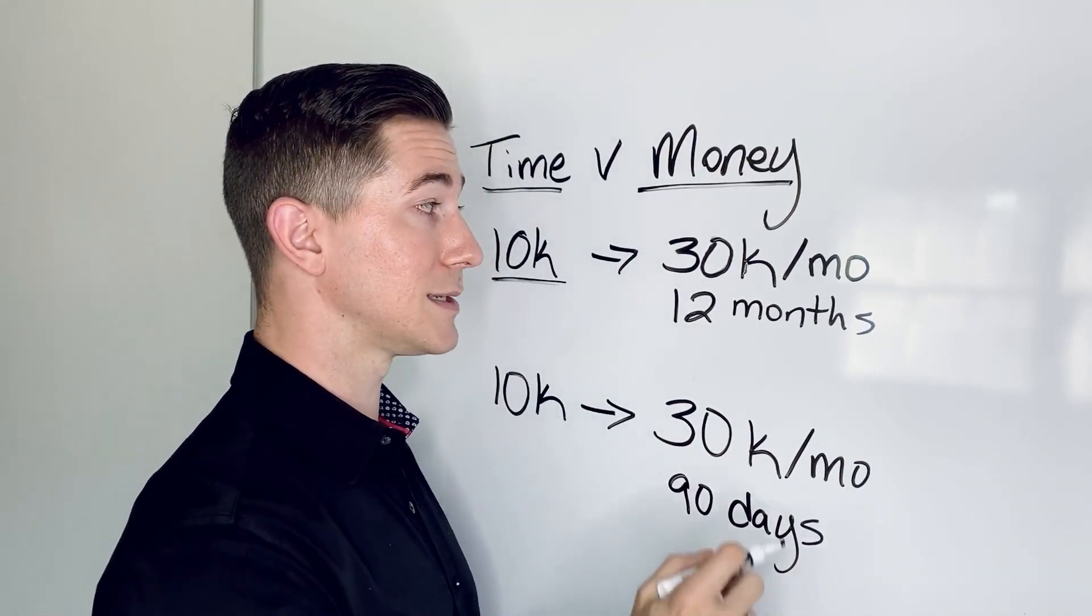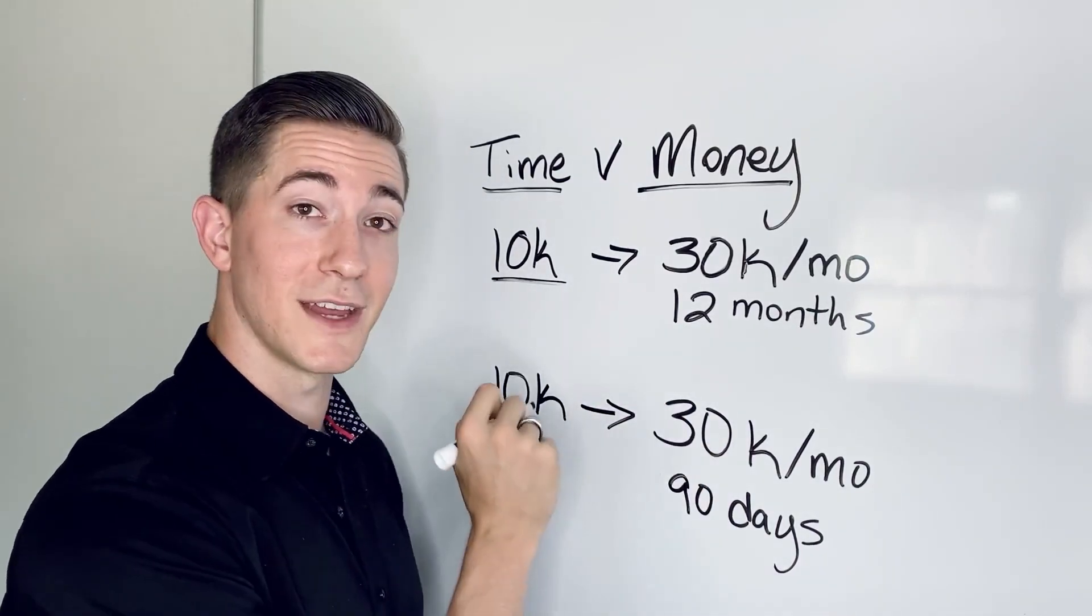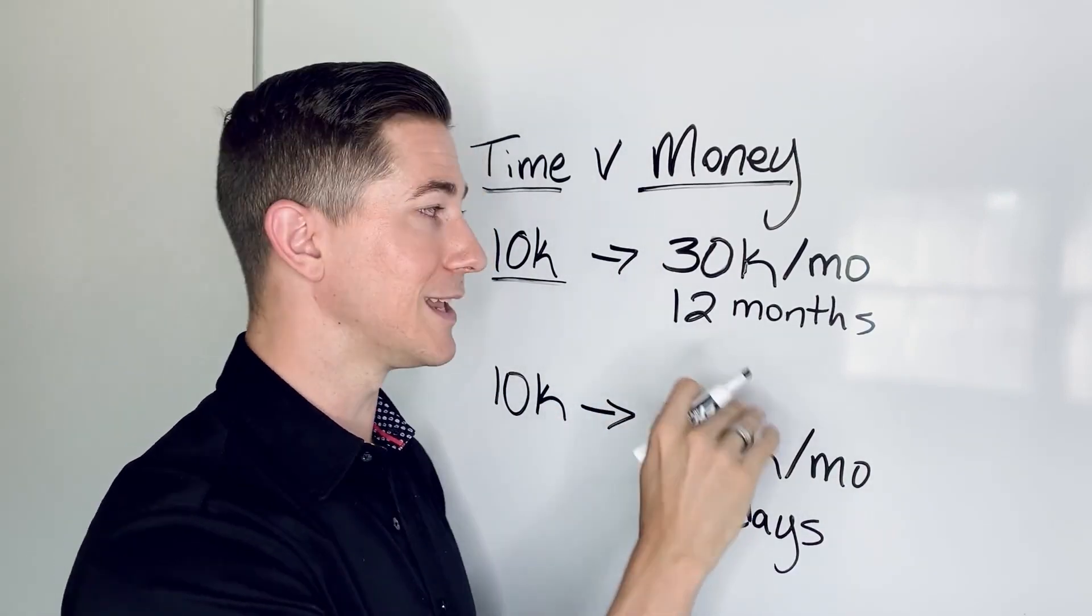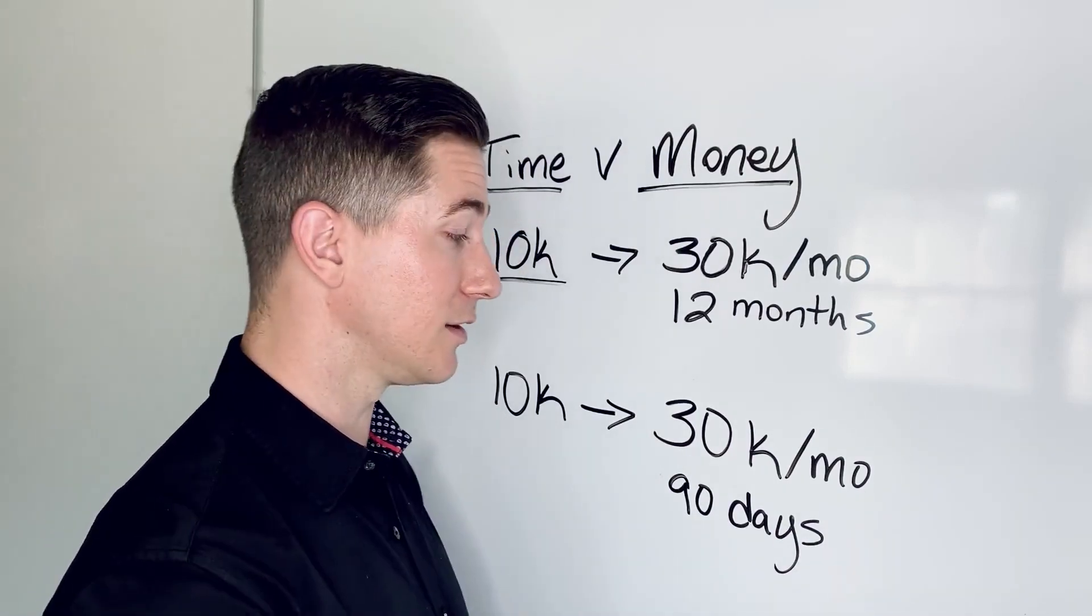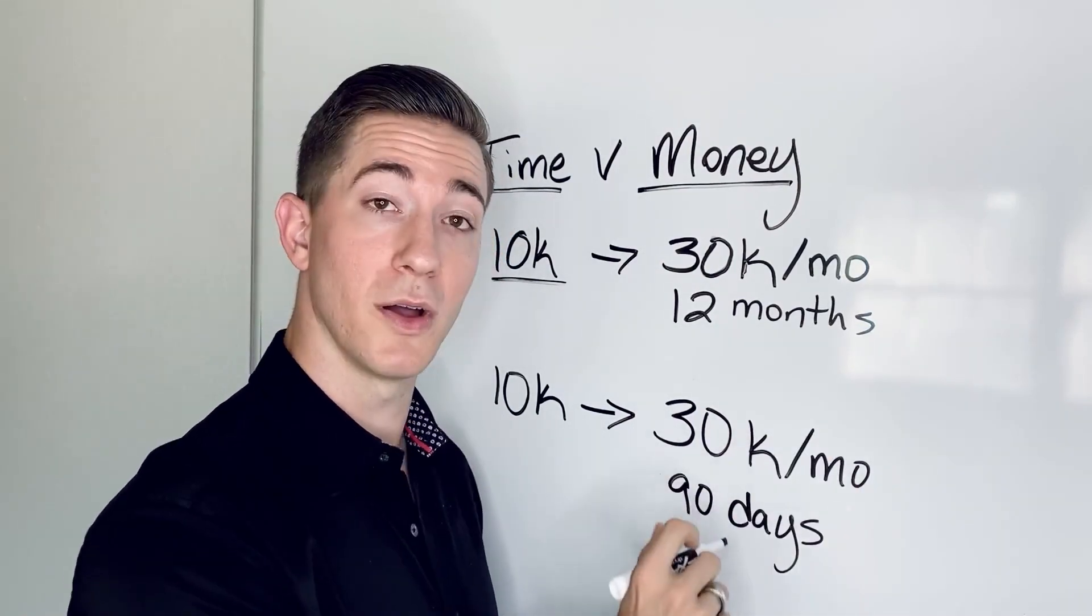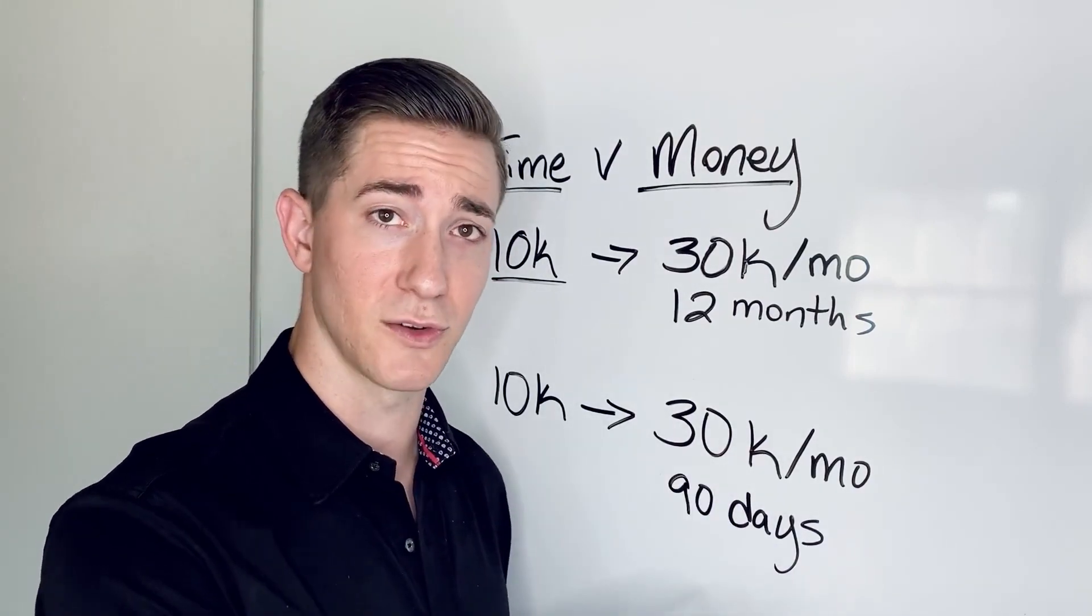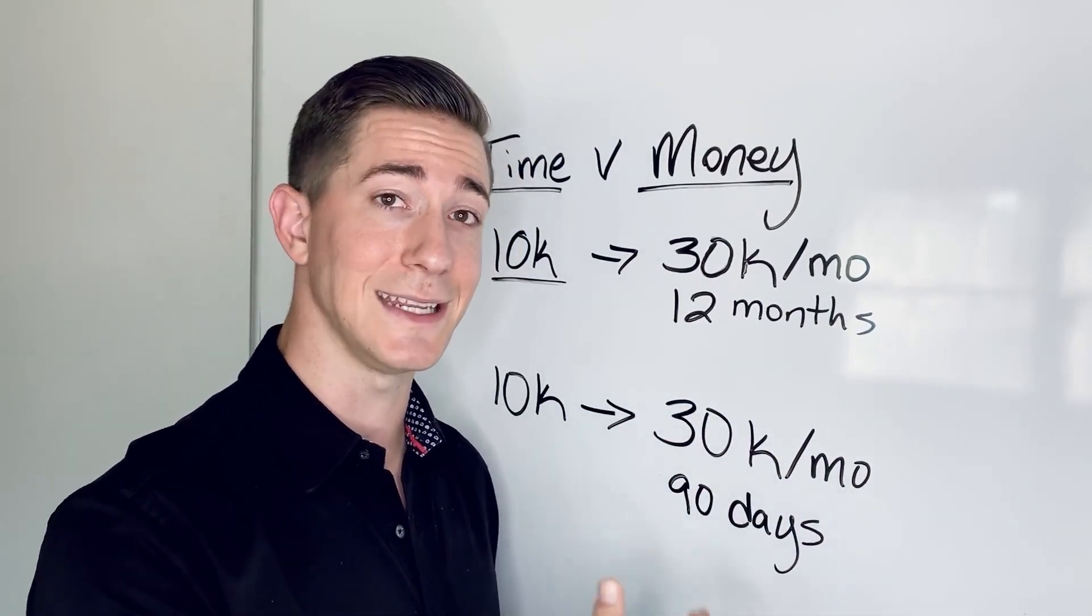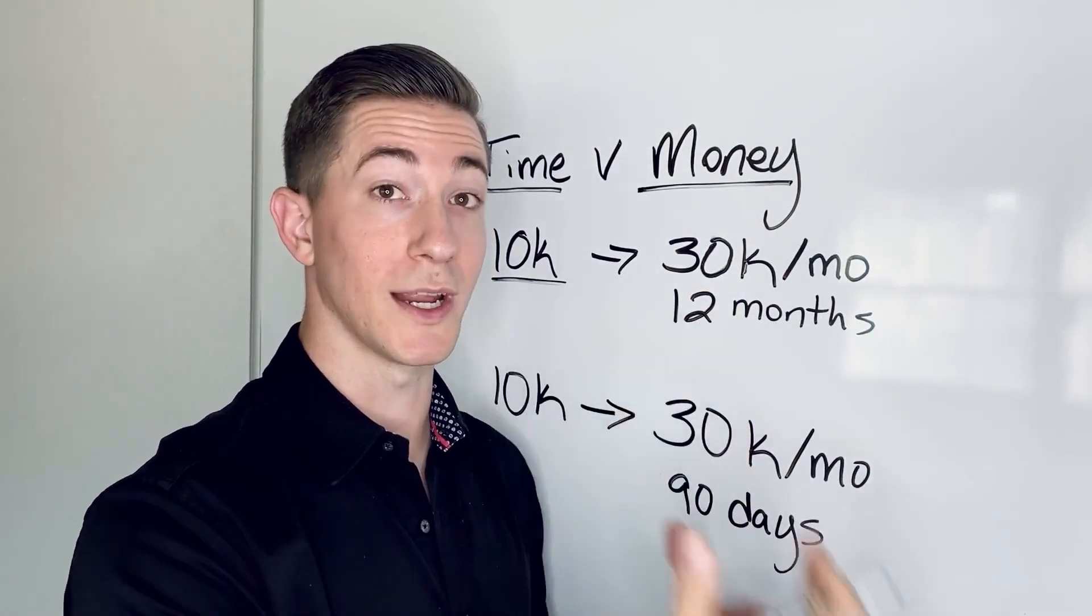So option number two is you can invest a little bit of money into coaching and you can shorten the timeframe that it takes you to get to $30K per month. So typically, if somebody's investing in high quality coaching, at least for our students, it's very realistic that you can get to $30K per month in 90 days. And that's being ultra conservative. We have students that get there in their first 30 days, some get there in 60 days, but I'm being conservative when I say 90 days to get to $30K per month versus 12 months trying to figure it out on your own.